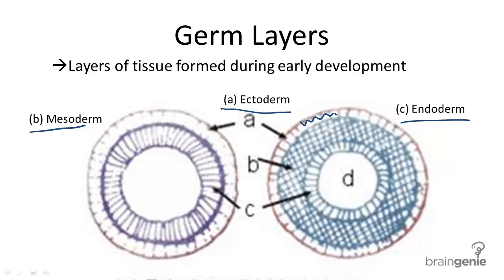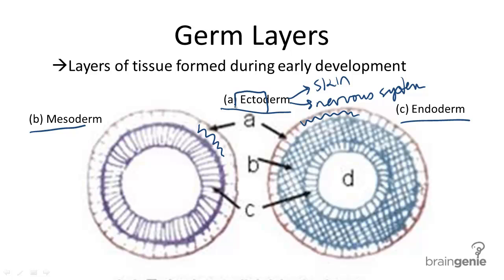The ectoderm is the outermost layer of an embryo. This layer becomes the skin and the nervous system. You can remember ectoderm by breaking off its prefix, ecto, meaning out. Think of out as the outermost layer of your body, such as the skin. And all over your skin includes touching, feeling, sensing receptors, which are nerves. So include the nervous system when you think of ectoderm.